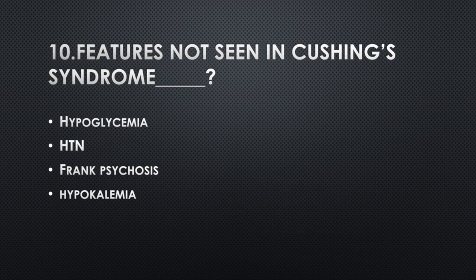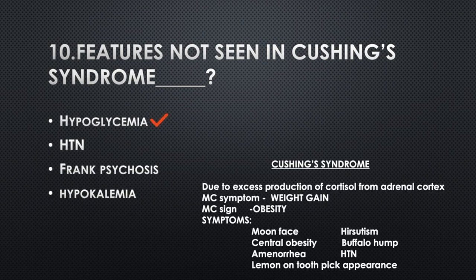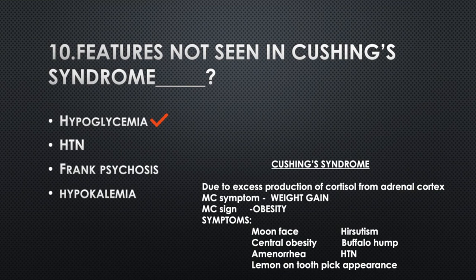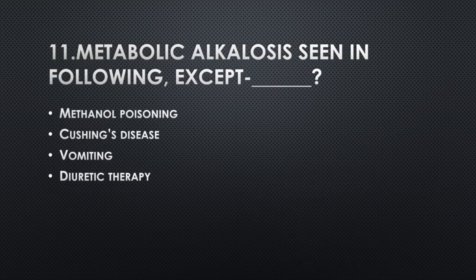Features not seen in Cushing syndrome — Option A: Hypoglycemia, Option B: Hypertension, Option C: Frank psychosis, Option D: Hypokalemia. Answer: Option A, Hypoglycemia. Cushing syndrome is due to excess production of cortisol from the adrenal cortex. Most common symptom: weight gain. Most common sign: obesity. Symptoms include moon face, central obesity, amenorrhea, lemon-on-toothpick appearance, hirsutism, buffalo hump, and hypertension.